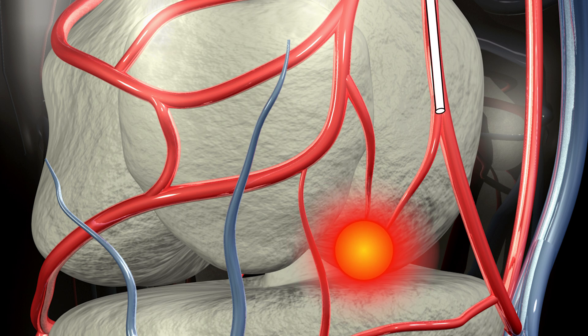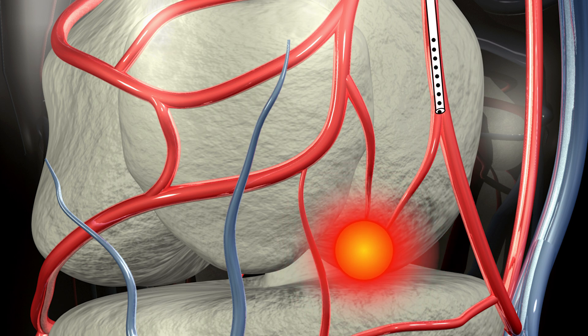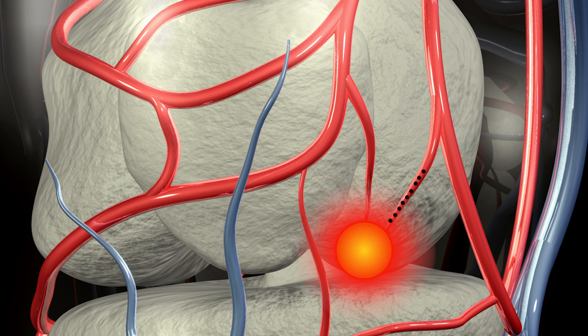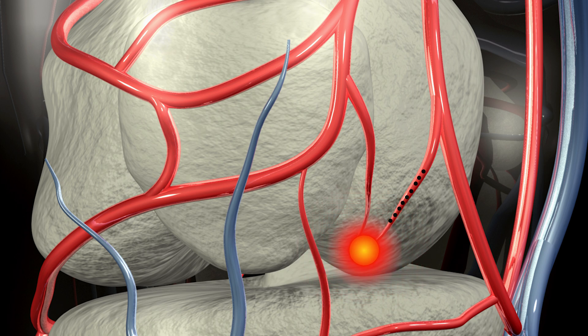Once we're there we inject particles. These particles are typically 0.1 millimeters in diameter. What that does is block these blood vessels and decrease the blood flow to the abnormal inflamed tissue within the knee joint, decreasing the inflammatory response — and that decreased inflammatory response translates into less pain for patients.